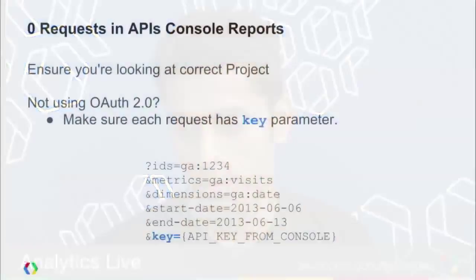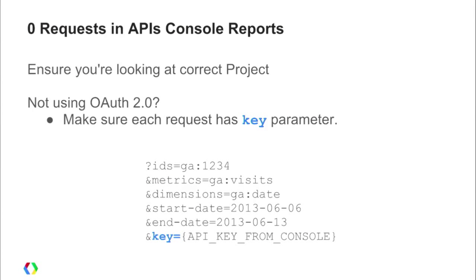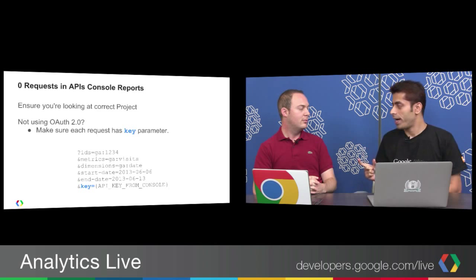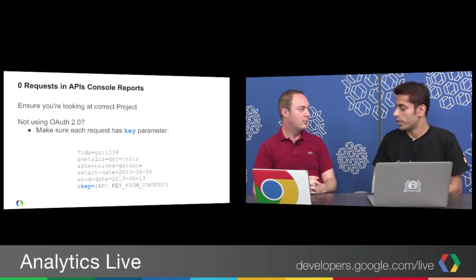Another problem: when you look at the APIs console and see zero requests, you may be wondering — I'm making all these requests but they're not being reflected in the console. Either you're not using OAuth 2 — as part of the OAuth 2 token, the project ID gets propagated with the request. If you can't use OAuth 2, use the API key for each project in the console with the key parameter in each request, so all quota gets assigned to that project.